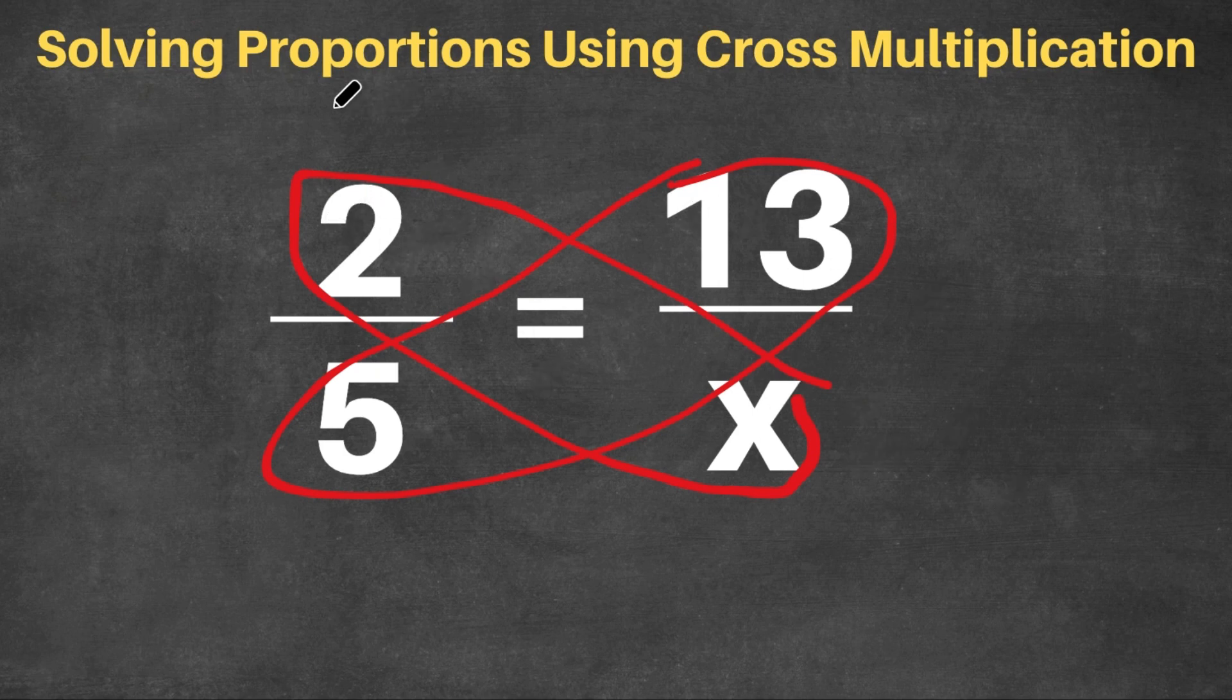2 times x, that's going to be 2x. And this is going to equal 13 times 5, which is 65.